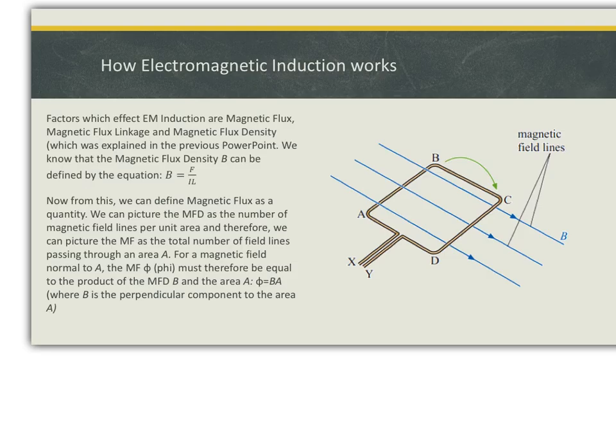The factors which affect electromagnetic induction are magnetic flux, magnetic flux linkage, and magnetic flux density. The magnetic flux density was explained in the previous PowerPoint. We know that the magnetic flux density, B, can be defined by the equation B equals F over IL.